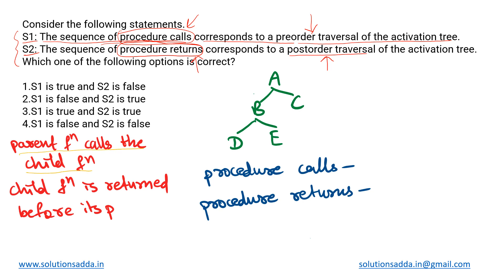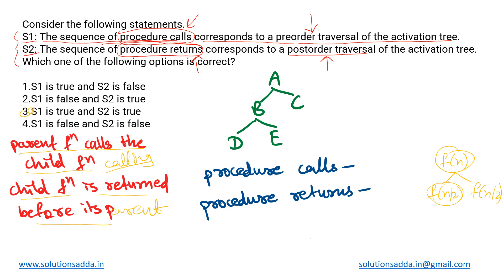First: a parent function calls its child function. As we saw, f(n) will call its children — f(n/2) and f(n/2) — so a parent is always called before its child; a parent itself calls its children. This is what we use while calling. Similarly, while returning from function calls, the child function is returned before its parent.